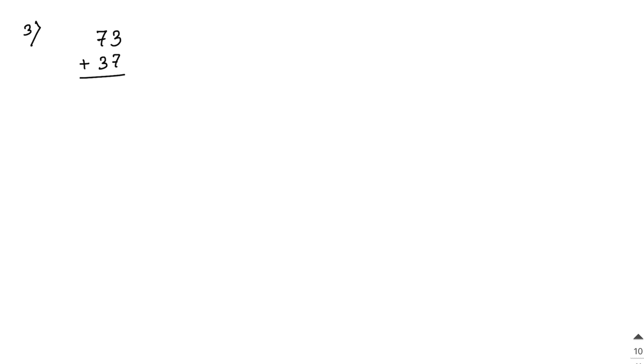Problem 3: Write the quotient when the difference of a two-digit number 73 and the number obtained by reversing the digit is divided by 9. The reverse of 73 is 37. The difference is 73 − 37 = 36. Dividing 36 by 9 gives 4. Dividing 36 by the difference of the digits (7−3 = 4) gives 9.